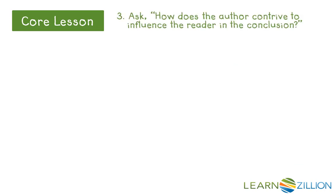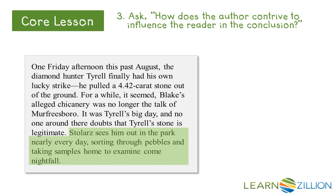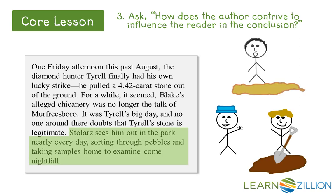Now I am ready to move on to the final step to determine how the author contrives to influence me by writing the conclusion the way he does. In reality, the support the author offers in its conclusion is not true evidence. Just because someone shows up every day to dig in the dirt does not prove that he actually found the diamond there. Isn't it possible that Tyrell also could have planted his diamond and pretended to dig it out? Throughout the article, Tyrell has served as a foil to Blake. The author continually presents Tyrell as an honest, hardworking man. I find it interesting that this same comparison and contrast of the two individuals is how author Brendan Burrell supports his conclusion rather than summarizing specific evidence.